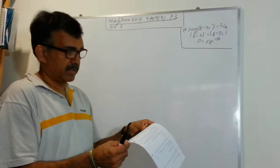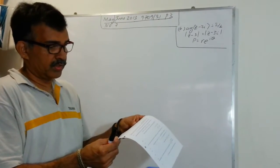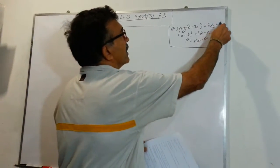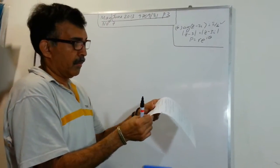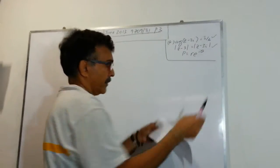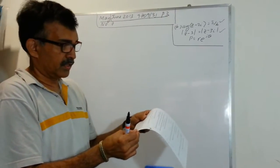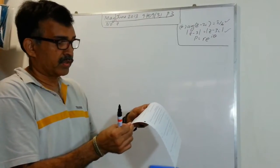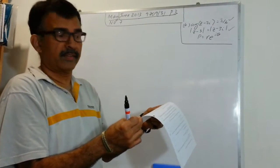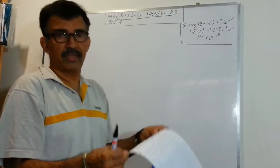In part B of number 7, on an Argand diagram, the loci: the argument of z minus 2i equals pi over 6, and mod z minus 3 equals mod z minus 3i, are given. They're told that the loci intersect at point P. You're asked to express the complex number represented by P in the form re^(iθ), giving the exact value of θ and the value of r to 3 significant figures.